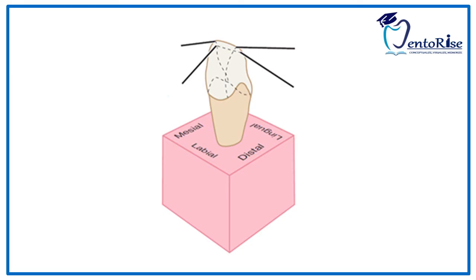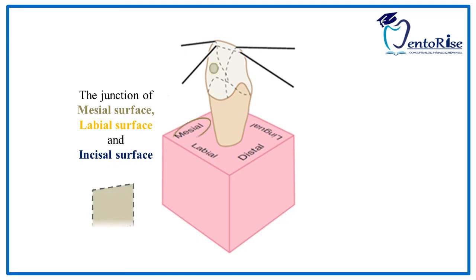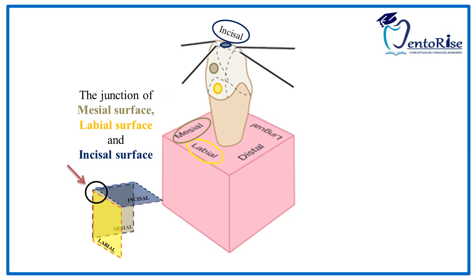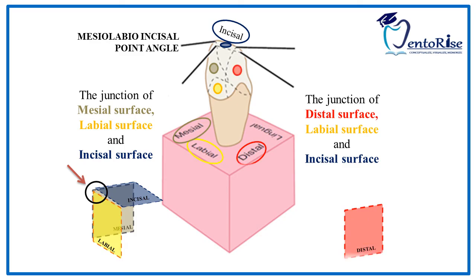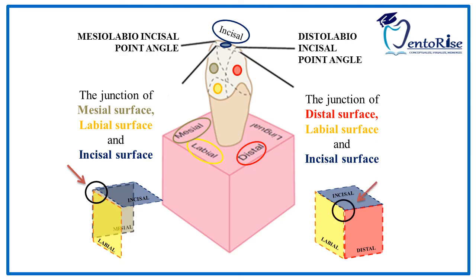Let's deal with the point angles of the anterior teeth. Point angles are formed by the junction of three surfaces. The junction of the mesial surface represented in grey, labial surface represented in yellow, and incisal surface represented in blue forms a point angle named the mesio-labio-incisal point angle. In a similar manner, the junction of the distal surface represented in red, labial surface represented in yellow, and incisal surface represented in blue forms the disto-labio-incisal point angle.